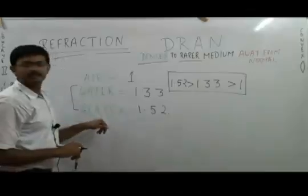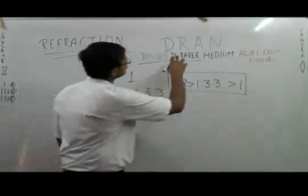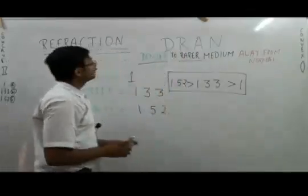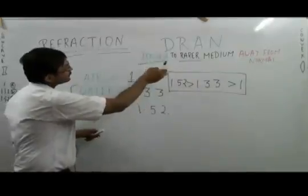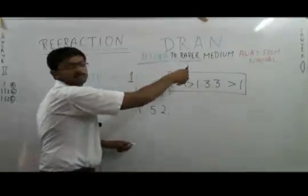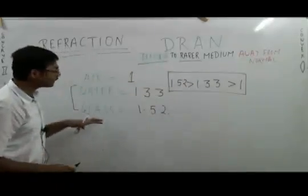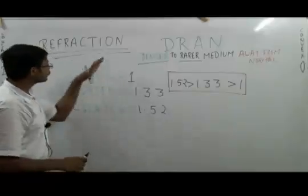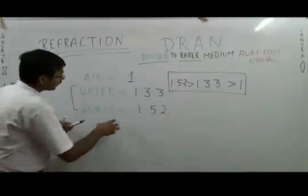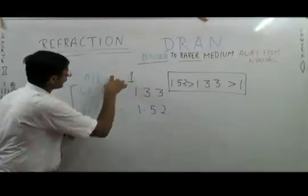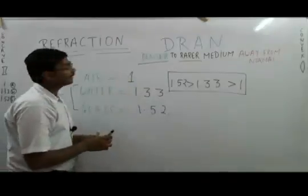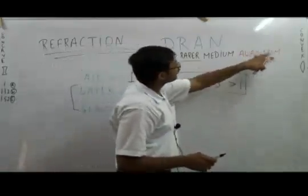So again repeating this rule of DRAN: if an incident ray moves from denser to rarer medium, suppose a ray is traveling in glass but it shifts to air, then the ray would be refracted away from the normal.